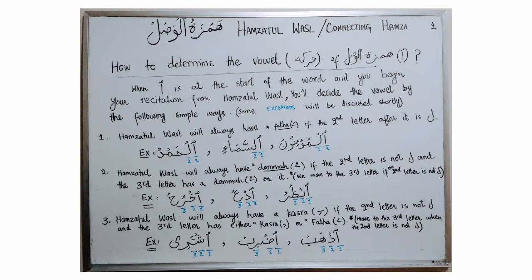Bismillah, alhamdulillah, assalatu wassalamu ala rasulillah, assalamu alaikum warahmatullahi wabarakatuhu. We have discussed already how to determine the vowel of Hamzat al-Wassl in most situations. The first rule: put Fathah on Hamzat al-Wassl if the second letter is Laam. If the second letter is not Laam, look at the third letter — if it has Dhamma, Hamzat al-Wassl will have Dhamma; if it has Fathah or Kasra, Hamzat al-Wassl will always have Kasra. This is the general rule, but now we will talk about some details and all the exceptions of the vowel of Hamzat al-Wassl.